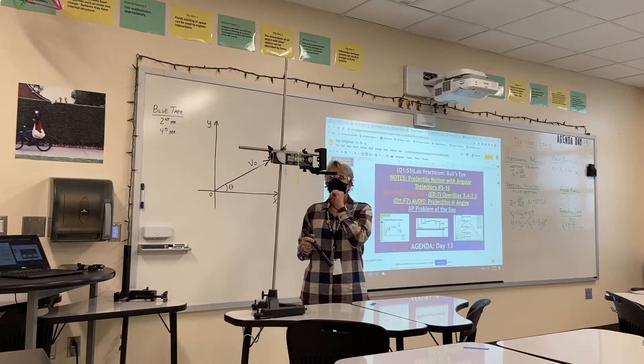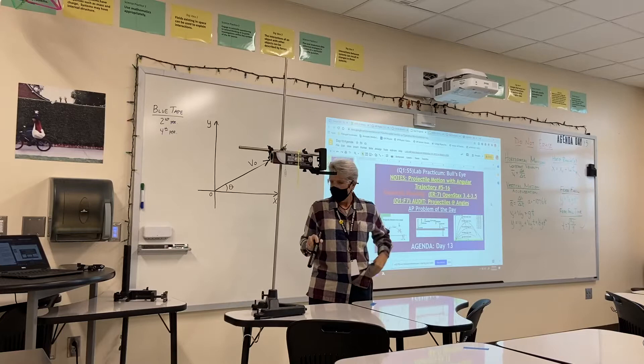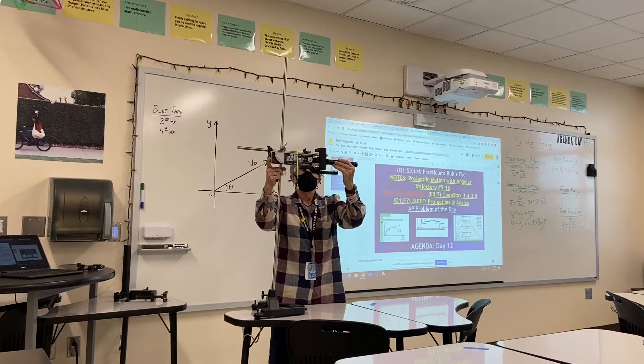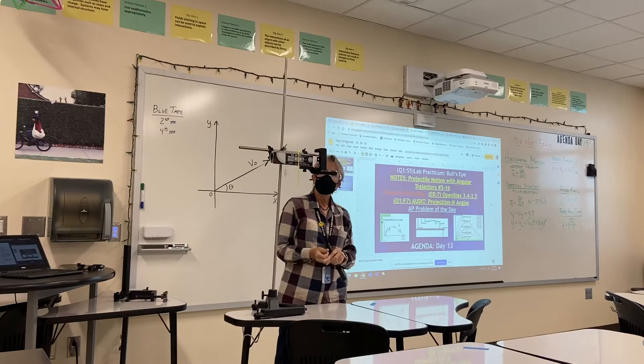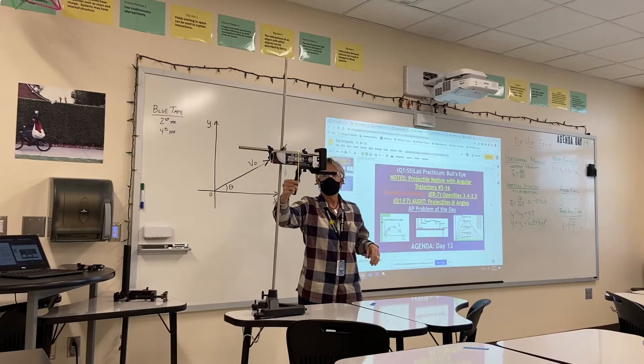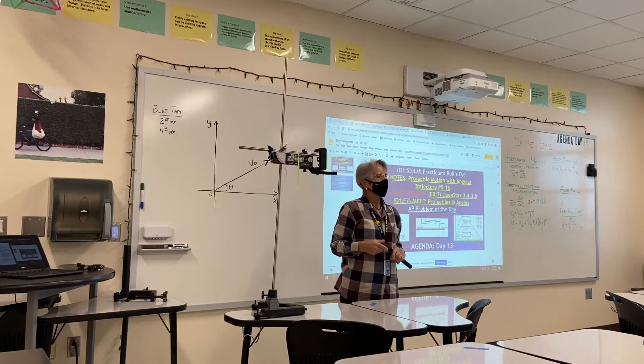Our projectile launcher has a spring inside, and we put a ball in the launcher and loaded it in to the short range, which is one click. And then what we have here is a photo gate — this L-shaped thing is a photo gate. The photo gate's job is to determine how much time it takes the ball to get through there, and it knows how big that ball is.